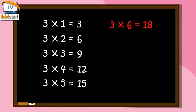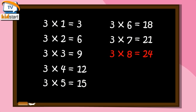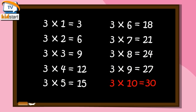Three Sixes are Eighteen. Three Sevens are Twenty One. Three Eights are Twenty Four. Three Nines are Twenty Seven. Three Tens are Thirty.